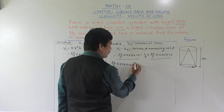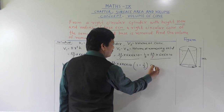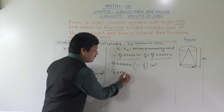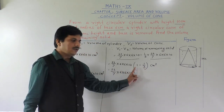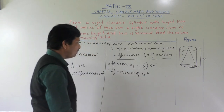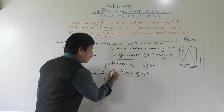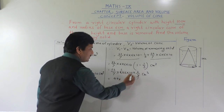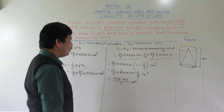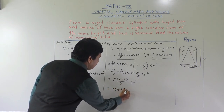Taking 22/7 multiplied by 6 into 6 into 10 as common, we get inside the bracket: 1 minus 1/3. That gives 2/3 centimeter cube. So we have: 22/7 into 6 into 6 into 10 multiplied by 2/3. The 3 cancels giving 6. So 22 times 2 is 44, times 60 is 2640, divided by 7 gives 754.28 centimeter cube. That is the volume of remaining solid.